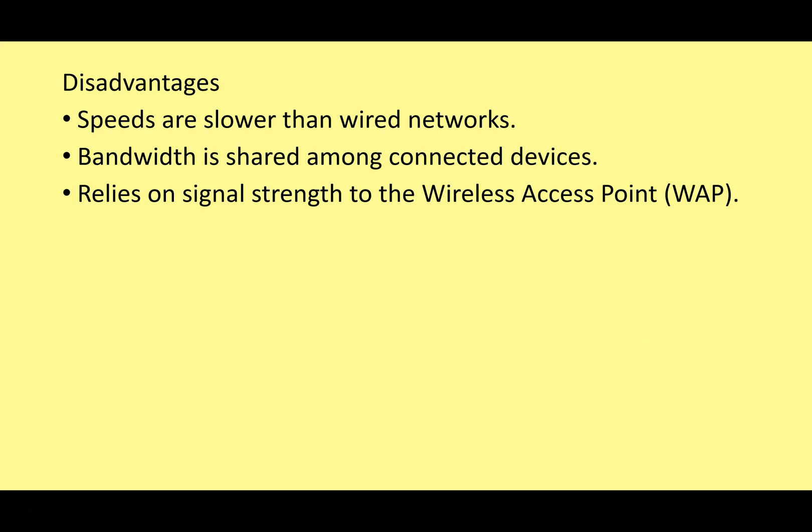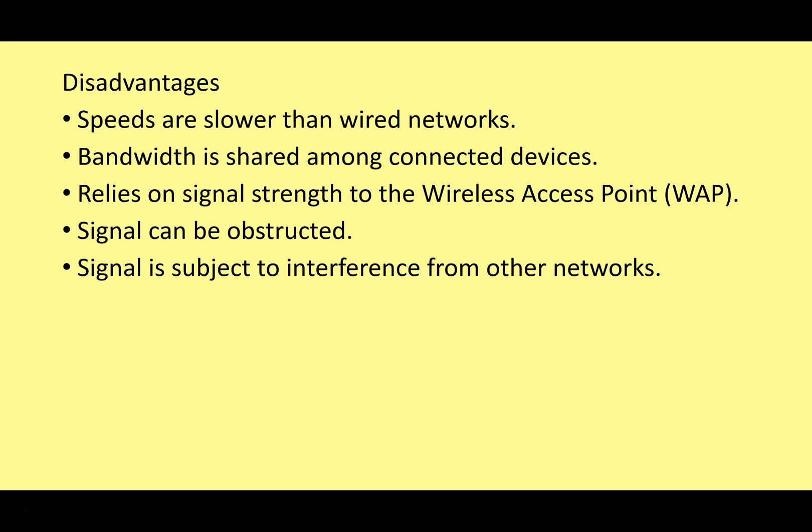It also relies on signal strength to the wireless access point. You've got to be close to it, and you can't have any interference. Signal can be obstructed — walls, depending on what they're made of, can block signals, and distance can weaken your signal. You also get interference from other networks; if you're in a large block of flats with lots of people using Wi-Fi, the signals from different routers can interfere with each other.